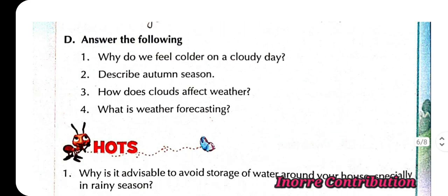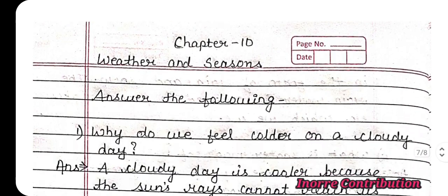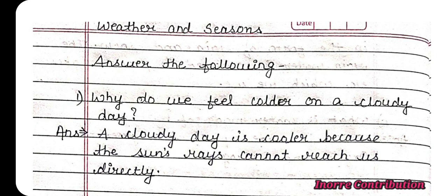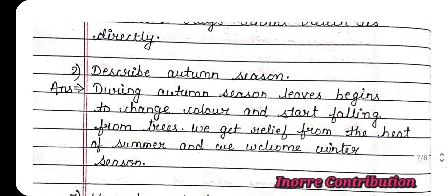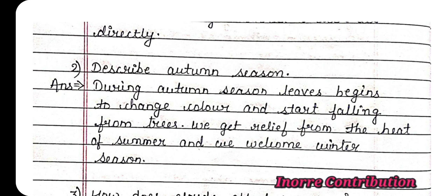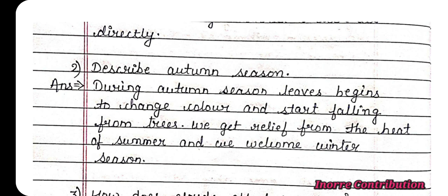Answer the following. 1st question: Why do we feel colder on a cloudy day? Answer: A cloudy day is cooler because the sun's rays cannot reach us directly. 2nd question: Describe autumn season. Answer: During autumn season, leaves begin to change color and start falling from trees. We get relief from the heat of summer and we welcome the winter season.